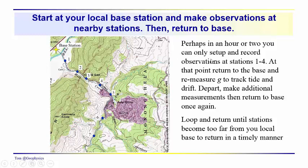Start at your base, go out and make a few observations. Maybe you can only take in about four observations, and then it's time to return to your base station to re-measure g and track the tide and the drift. The drift can be due to long-term mechanical strain on the instrumentation. It can also be due to temperature variations — gravimeters are usually well insulated to avoid that — but you have to incorporate some instrument drift usually. You loop and return until stations become too far away that you can't make it back in time to get a sensible idea of how the tide and drift are influencing your measurements.